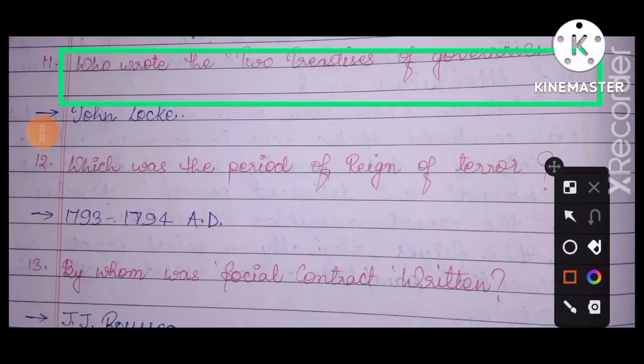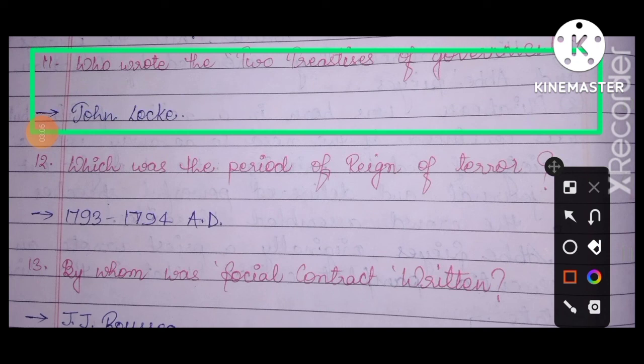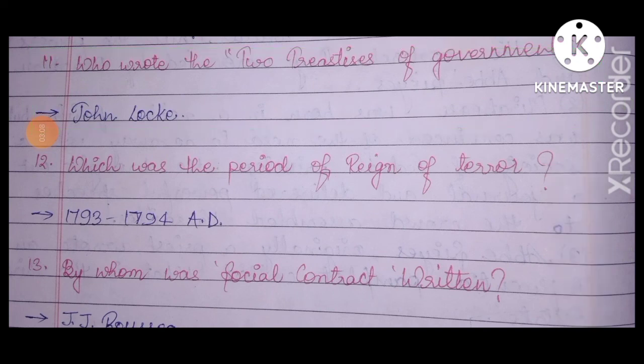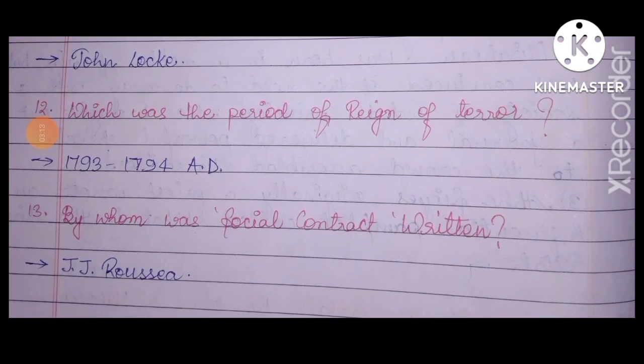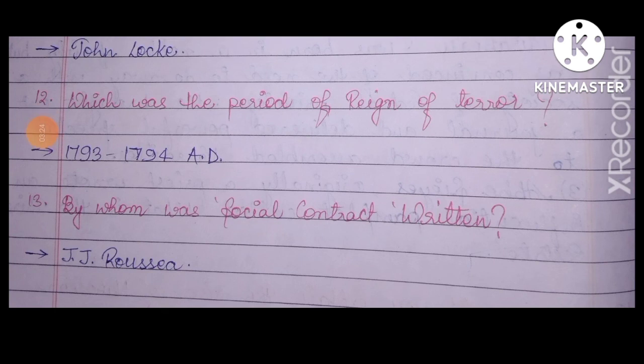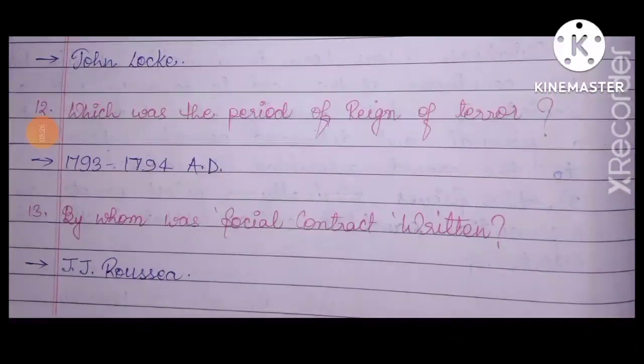Quick questions: who wrote the Two Treatises of Government? — John Locke. What was the Reign of Terror? — Remember 1793 to 1794. By whom was the Social Contract written? — J.J. Rousseau.